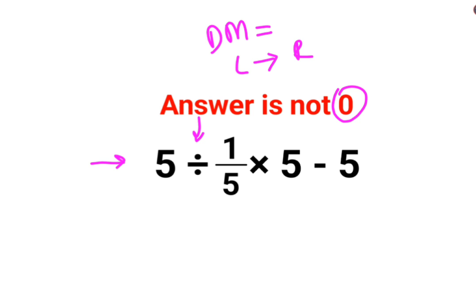So first we will do 5 divided by 1 by 5. Now here you will follow the rule of KCF, especially when there is a fraction involved. You need to do KCF where K stands for keeping the first number as it is, C stands for changing the division sign to multiplication, F stands for flipping or taking reciprocal of 1 upon 5, which is 5 multiplied by 5 minus 5.